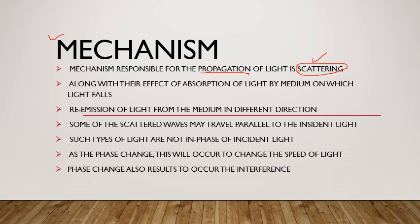ایک medium M پر visible light incident ہو رہی ہے۔ یہ light scattered ہو گئی different directions میں — یہ اسی side جا سکتی ہے، اس side میں بھی جا سکتی ہے، واپس بھی آ سکتی ہے۔ Incident light کو circle سے represent کرتے ہیں اور باقی جو ساری ہیں وہ scattered waves ہیں۔